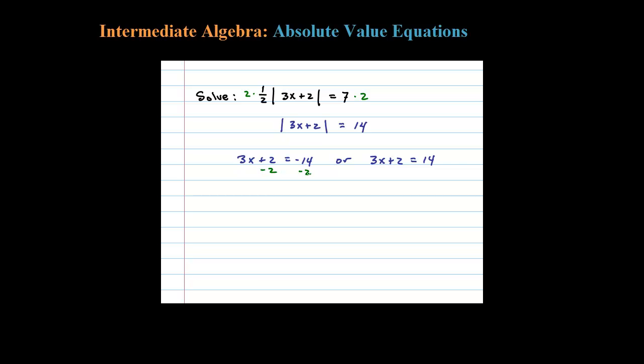Let's do them separately. Here we would first subtract 2, so 3x equals negative 16. Then dividing by 3, here's one solution: x equals negative 16 thirds.